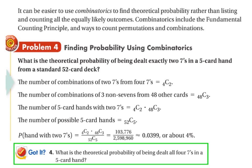Moving into a different area of probability, we're talking about combinatorics. We use combinatorics to find theoretical probability, rather than listing and counting all the equally likely outcomes. Combinatorics includes the ideas of the fundamental counting principle and ways to count permutations and combinations. We're going to be focusing on a five-card hand from a standard 52-card deck. The first question is the theoretical probability of being dealt exactly two sevens in a five-card hand. First we determine how many ways we can get a combination of two sevens from four sevens. That's where we have the 4C2 come from.